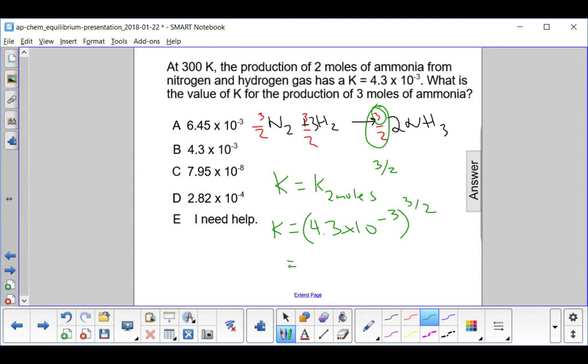and so you get 2.82 times 10 to the minus fourth, which is d.